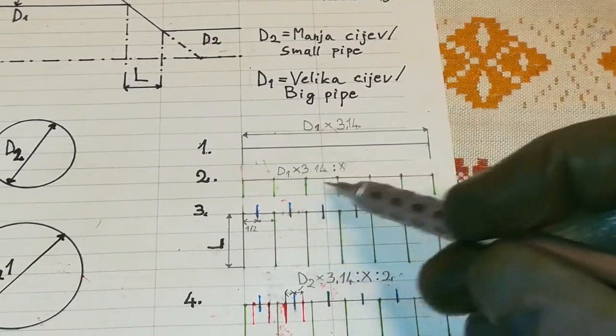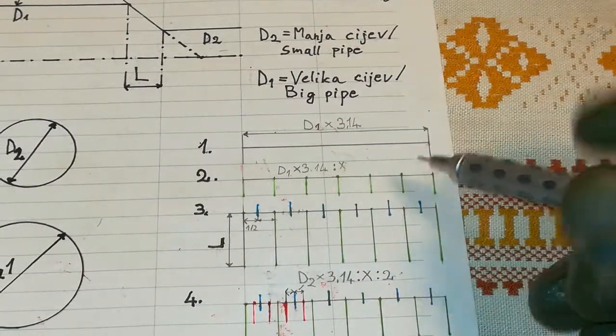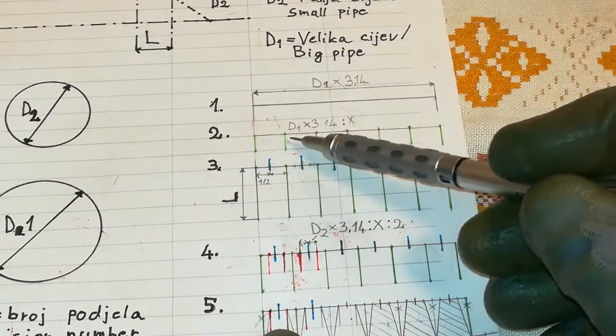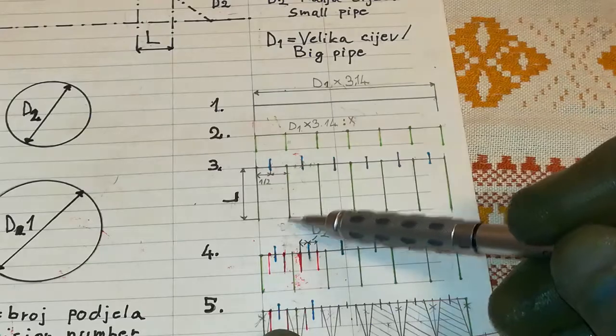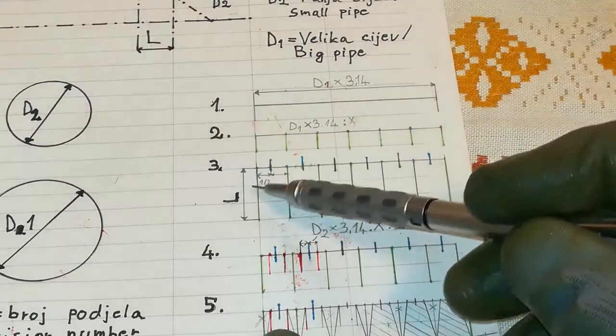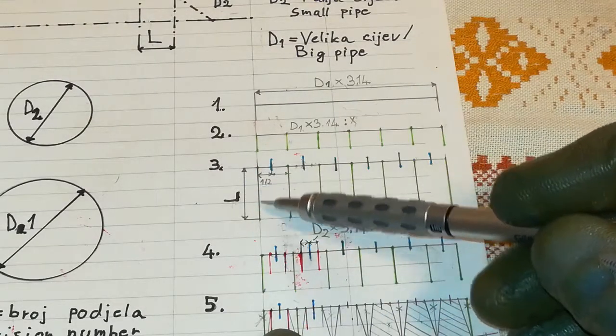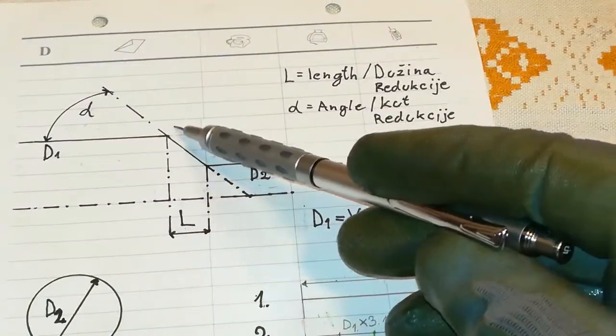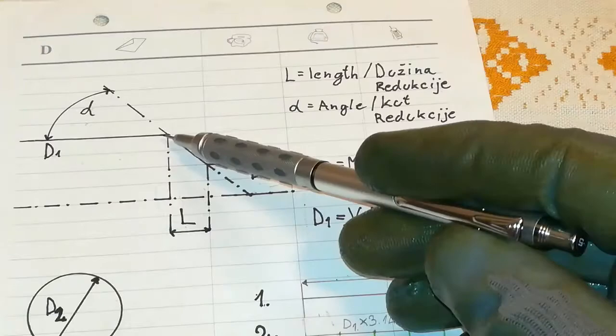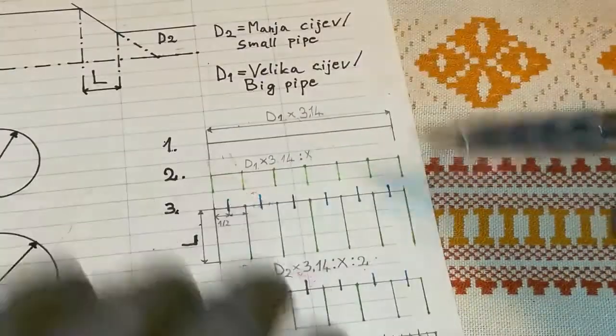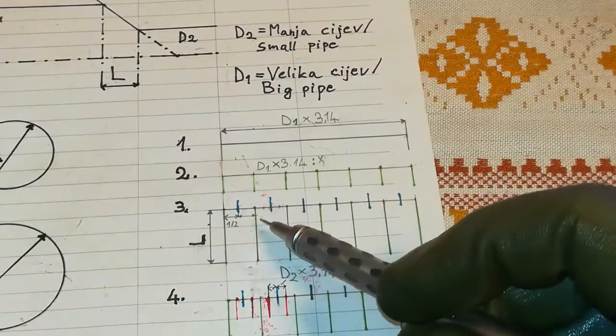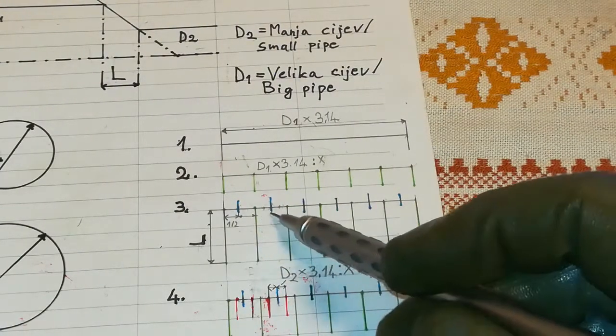For this example, I'm using 6 divisions. Let's continue to step 3. We're going to extend those lines of 6 divisions. The length of these lines will correspond with the length of the taper, or in this case, pipe reduction. After we have done that, we're going to split these 6 divisions in half.